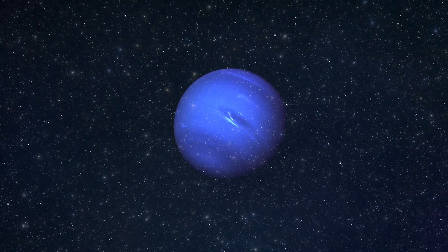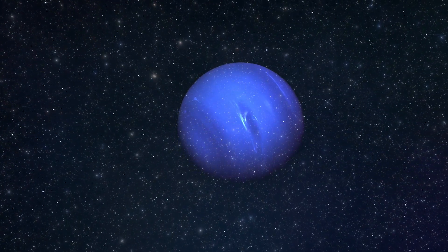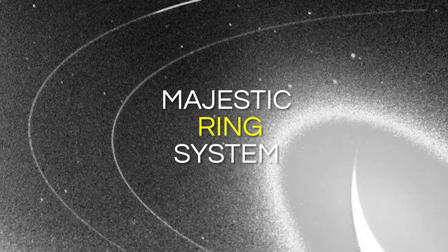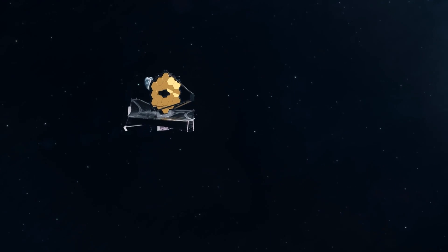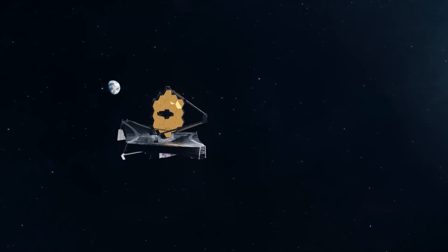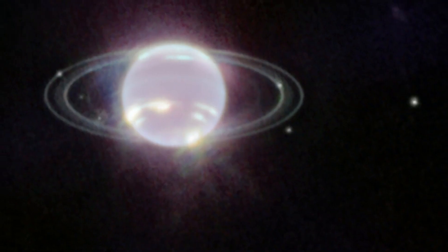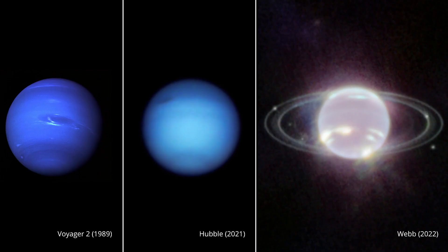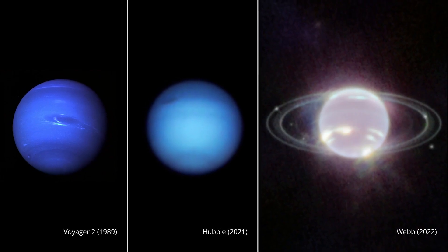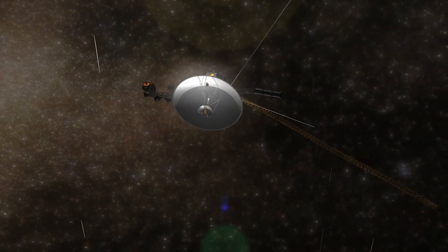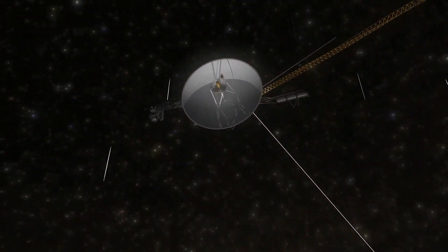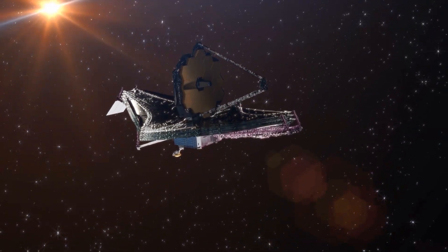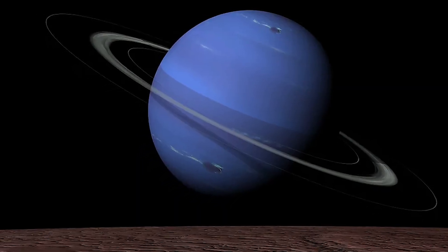Additionally, Neptune also boasts a remarkable feature like its gas giant counterparts, the presence of a majestic ring system. In 2022, the James Webb Space Telescope treated us to a stunning near-infrared image of Neptune, unveiling its delicate rings and satellites. The previous snapshot of Neptune's rings was taken more than three decades ago by the Voyager 2 spacecraft. However, with Webb's technological prowess, we can now glimpse approximately five distinct rings encircling the planet.